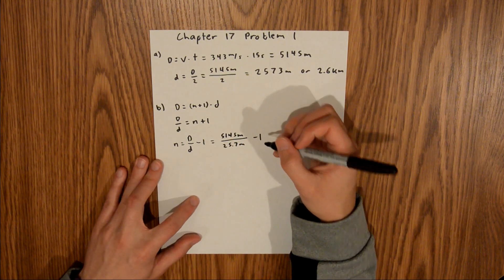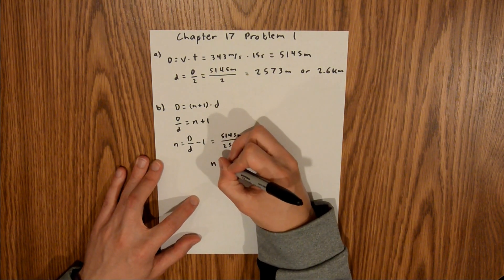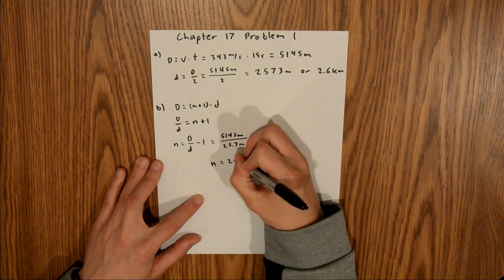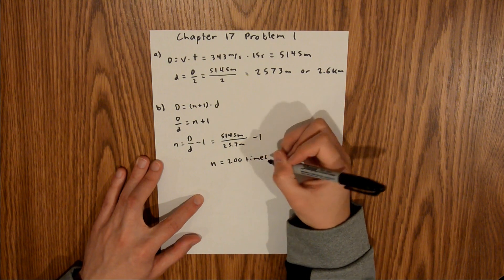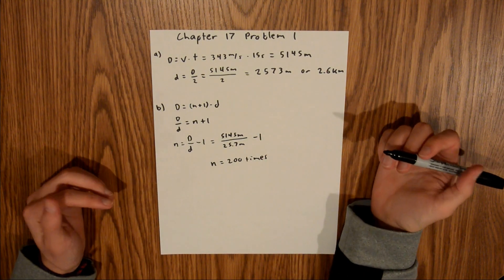If you plug that into your calculator, you should get that the number of reflections is roughly 200. So it bounces off the walls 200 times.